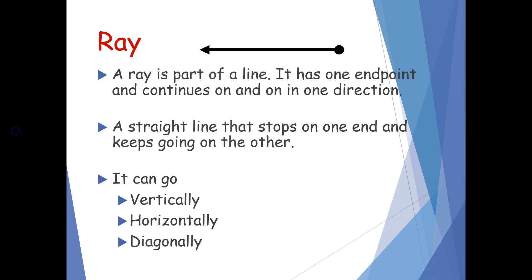A ray can go vertically, horizontally, or diagonally just like a line segment and a line.